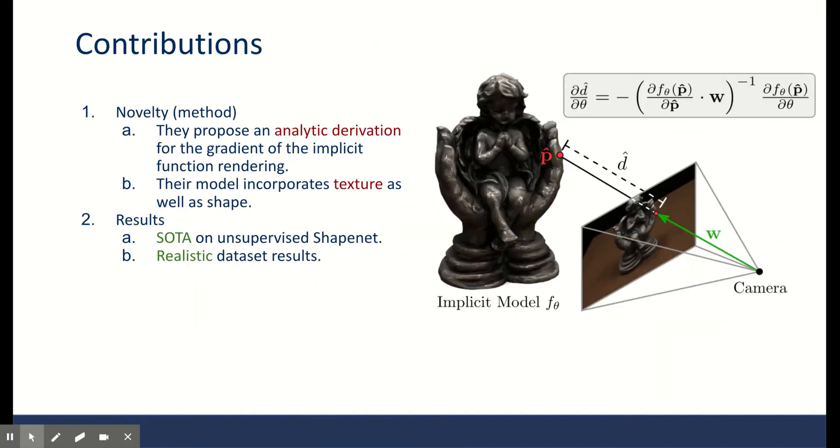Therefore, their contribution in this work addresses these two presented challenges. They derive an analytical formulation for the gradient of surface rendering to an implicit function, and they also propose training on the texture and color of the surface directly. As a result, they were able to achieve state-of-the-art unsupervised 3D modeling on both ShapeNet and a more complex dataset, DTU.